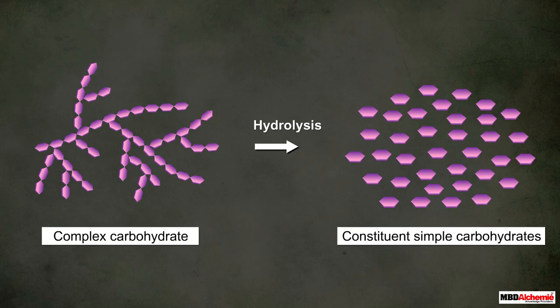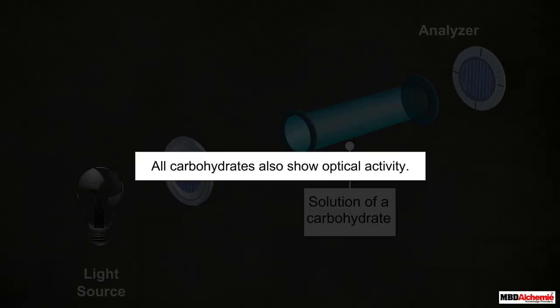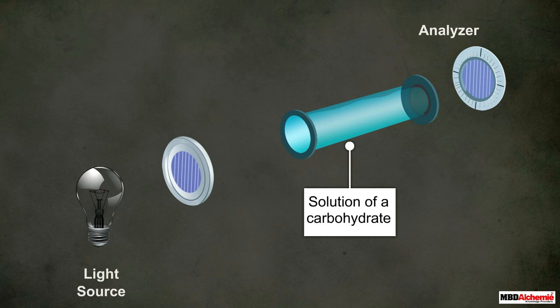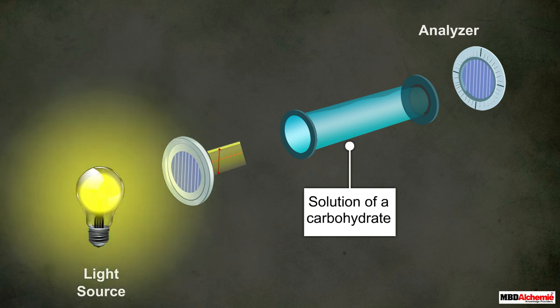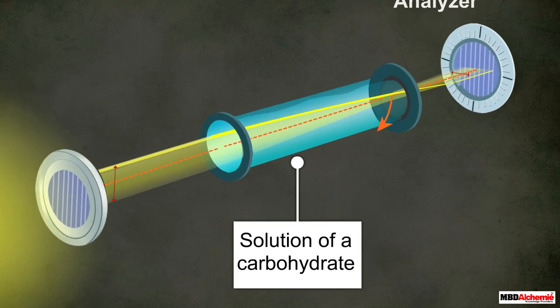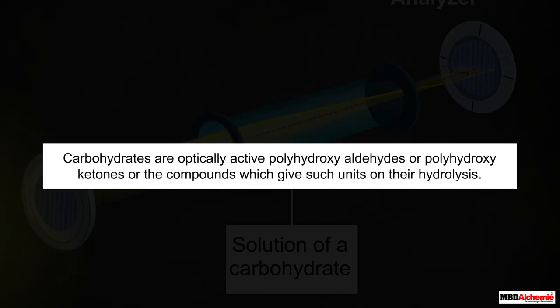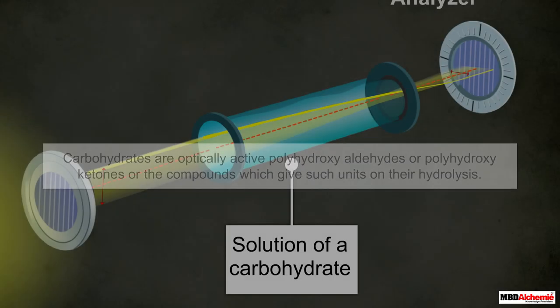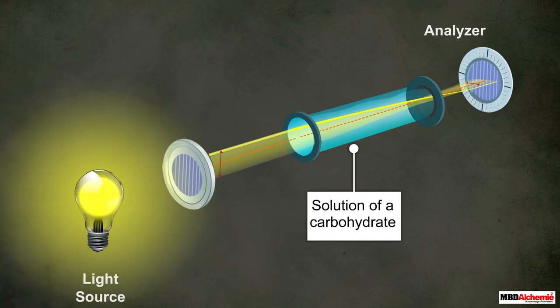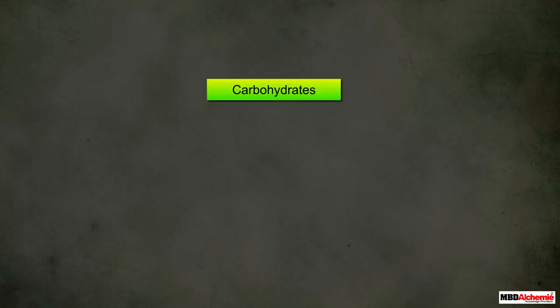Other than the similarity in their structure, carbohydrates also show optical activity. Optical activity means that when plane polarized light passes through the solution of a carbohydrate, the plane of light rotates through a certain angle. Based on these similar characteristics, carbohydrates are defined as the optically active polyhydroxy aldehydes or polyhydroxy ketones, or the compounds which give such units on their hydrolysis.